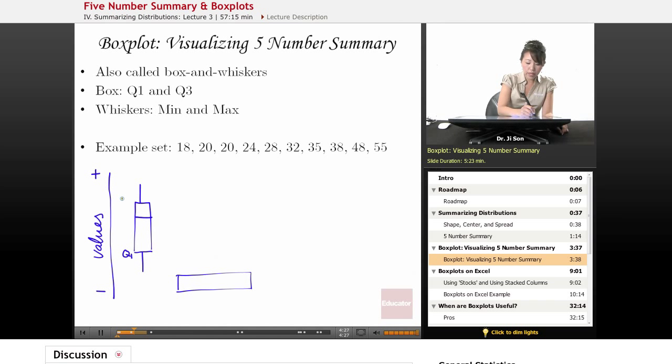Q3 is on the high end. Those are the boundaries of that box. The line in the middle is the median, and the whiskers end at the minimum value and the maximum value. So that's how you decipher a box plot.